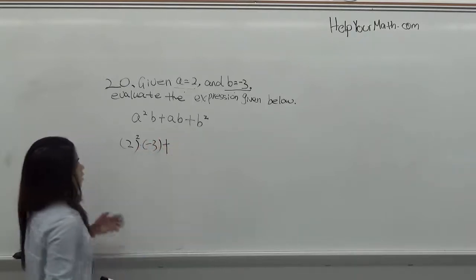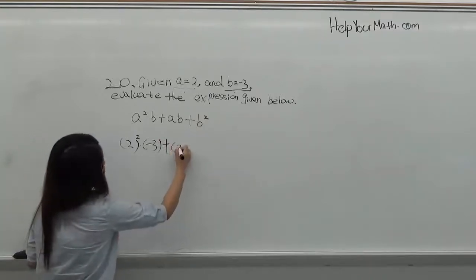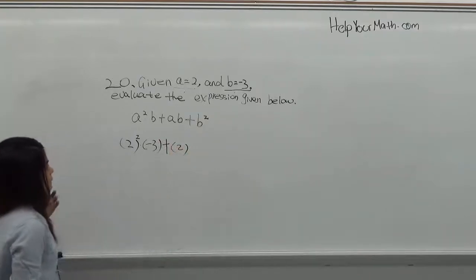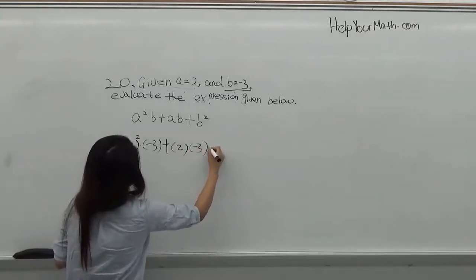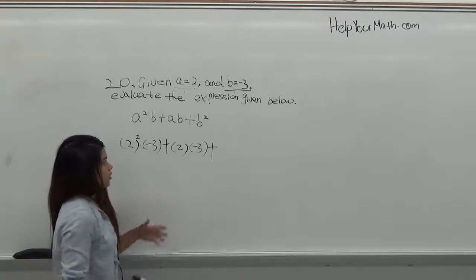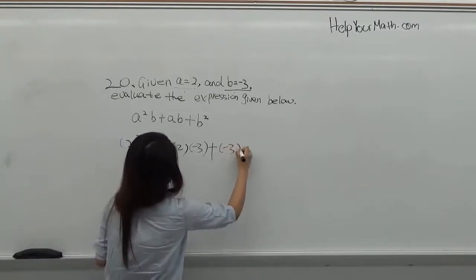And plus a, which is 2, and times the b, which is negative 3. Plus the b squared is negative 3 squared.